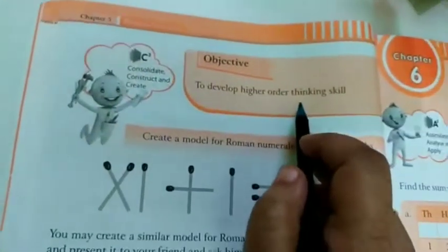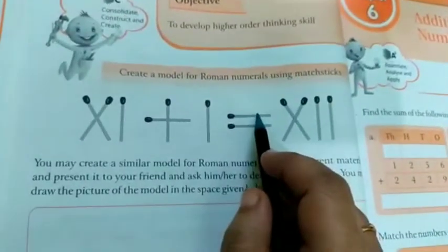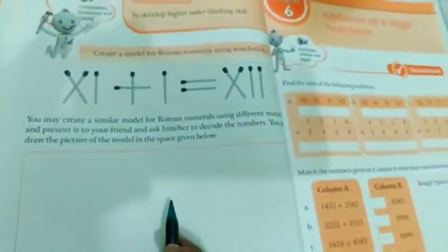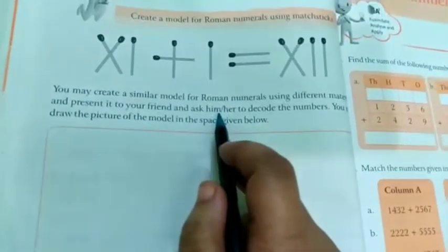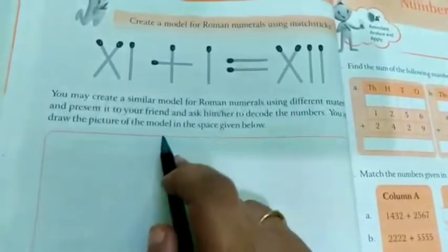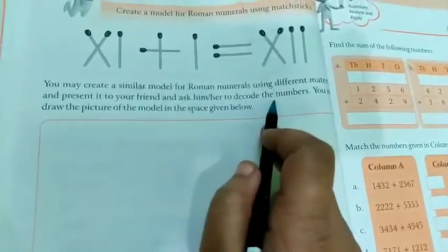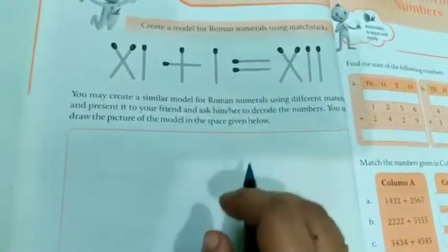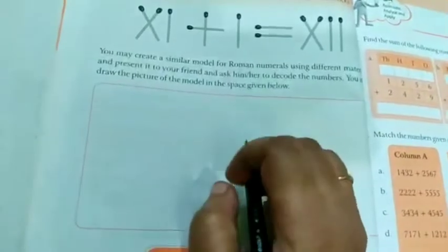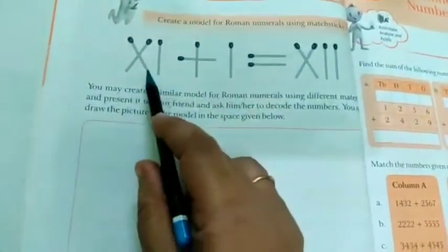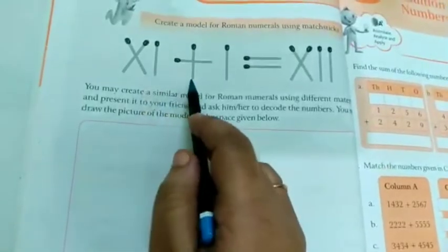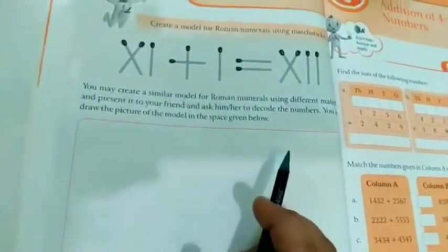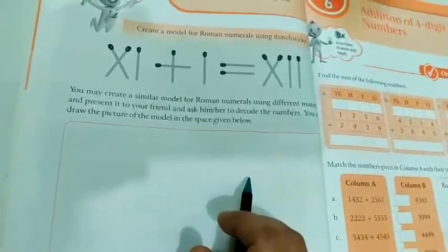Now turn the page to develop higher order thinking skill. Create a model for roman numerals using math sticks. You can use like this math stick and you have to paste here, make a model. You may create a similar model for roman numerals using different material and present it to your friend and ask him or her to decode the numbers. You draw the picture of the model in the space given below. You can paste the same or you can make the difference. Simple is there: 10, 1 that is 11 plus 1 is equal to 12. Aap math stick bhi laga sakti ho ya phir koi bhi another material bhi uske liye use kar sakti ho.